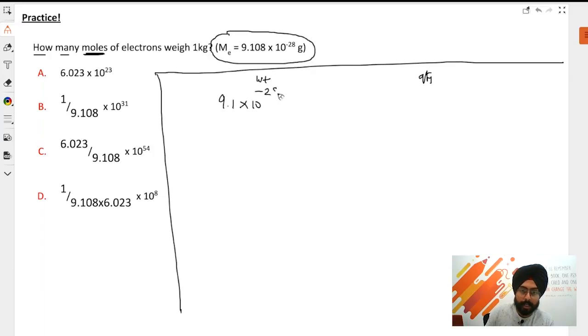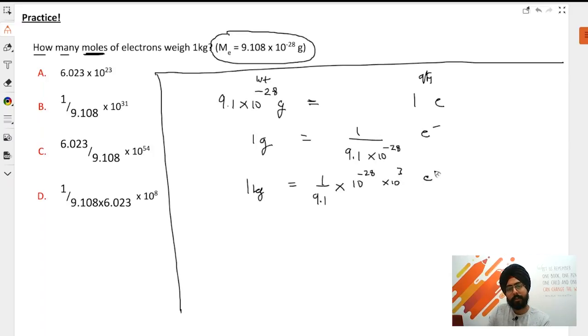So 9.1 × 10^-28 grams equals one electron. Therefore, one gram equals 1/(9.1 × 10^-28) electrons. For one kg, you multiply both sides by 1000 or 10^3. So 1 kg equals 1/(9.1 × 10^-28) × 10^3 electrons.